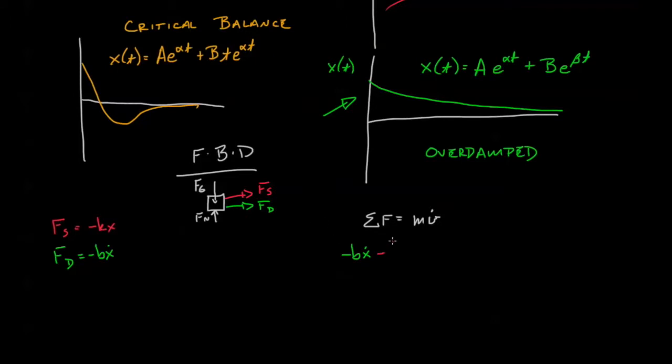So that's negative kx and the drag force is negative bẋ. Great, now we can plug in these equations and see what we get. mẍ + bẋ + kx equals zero.